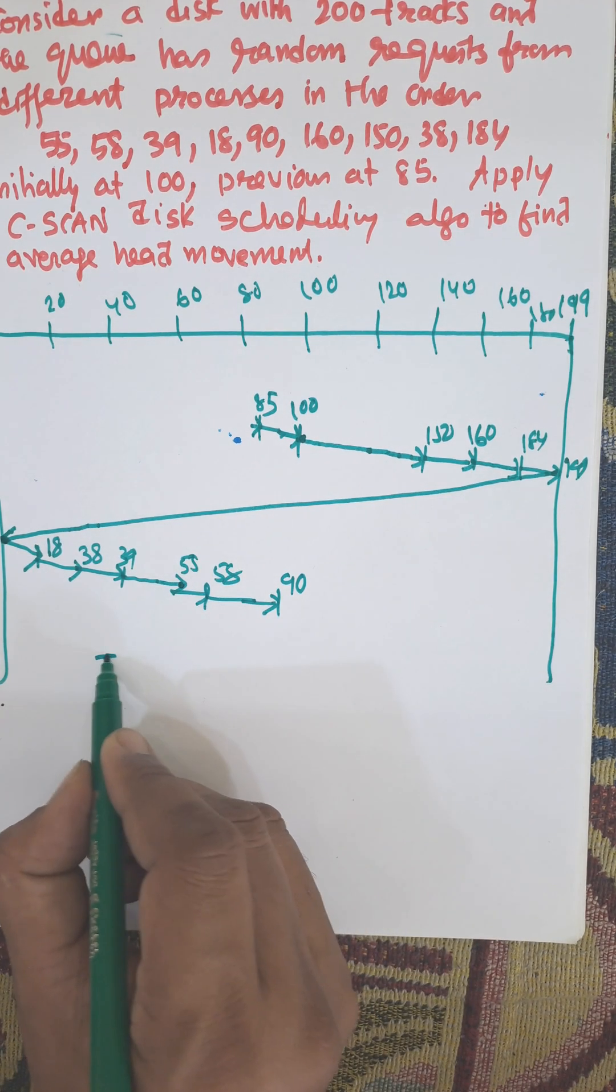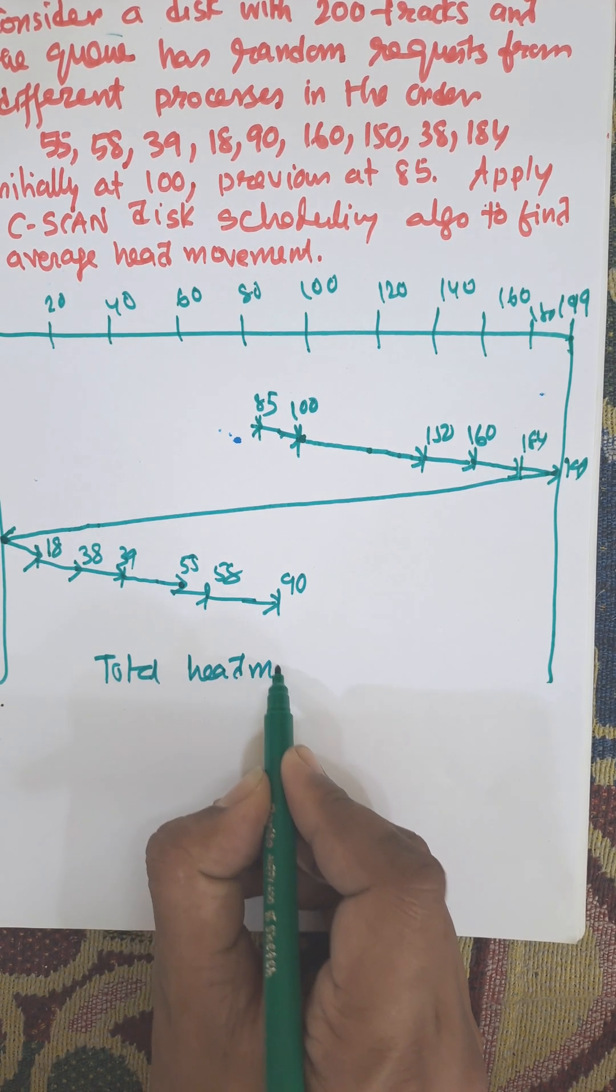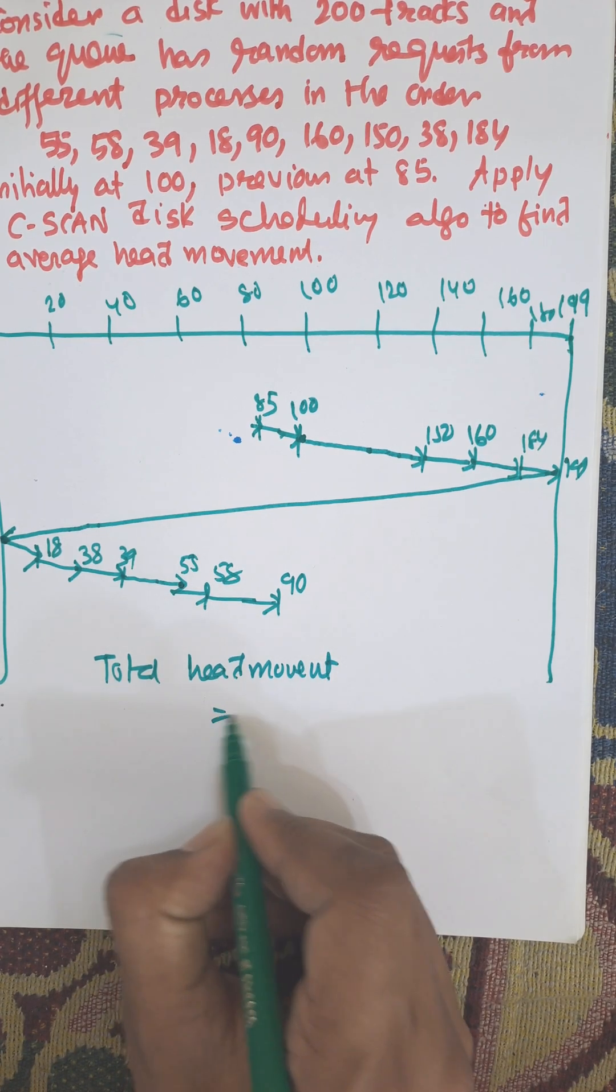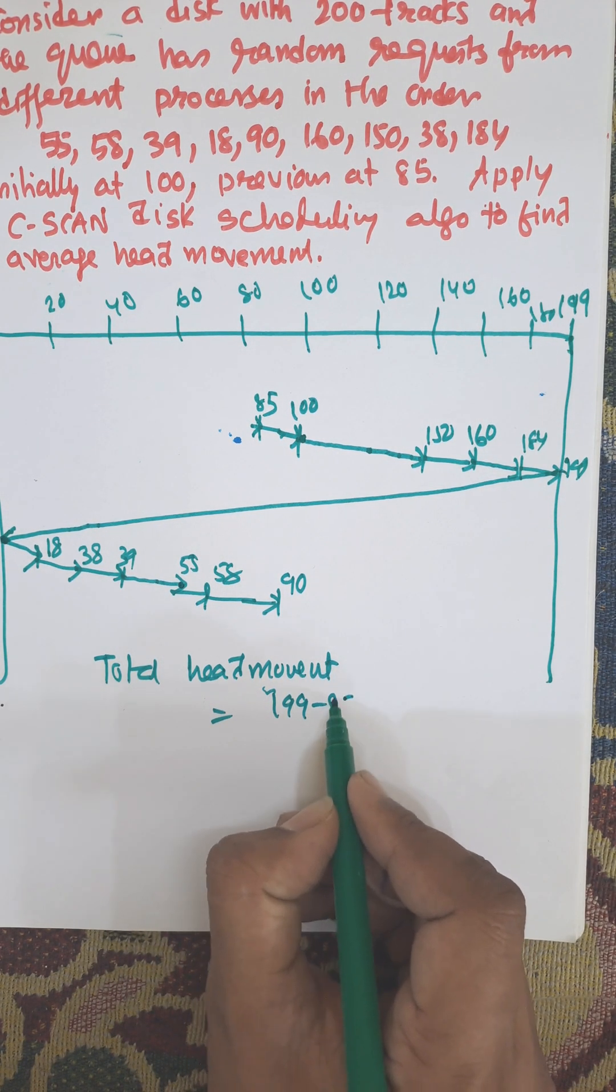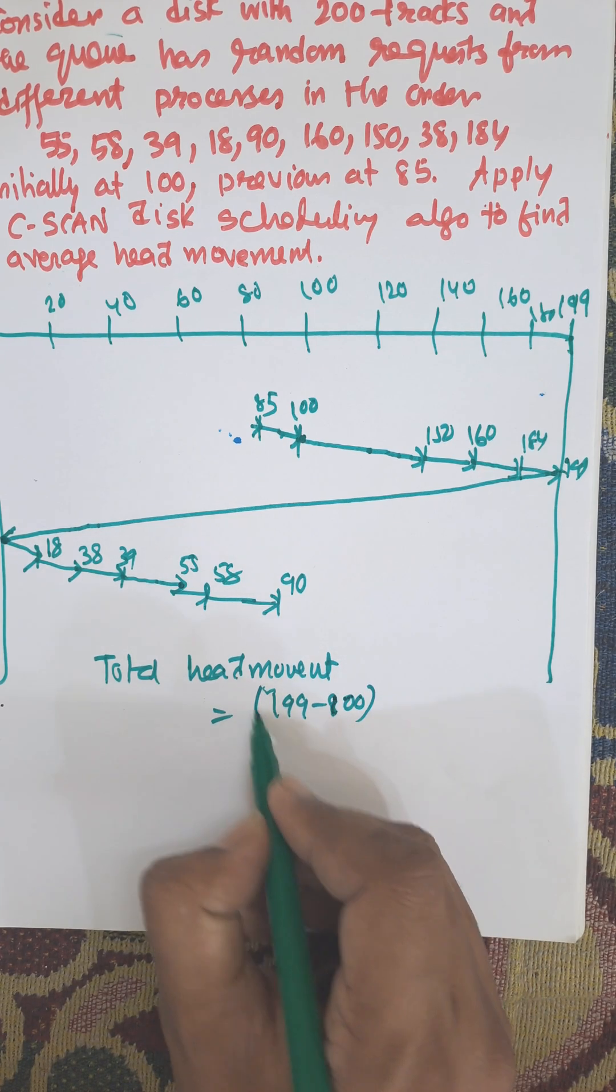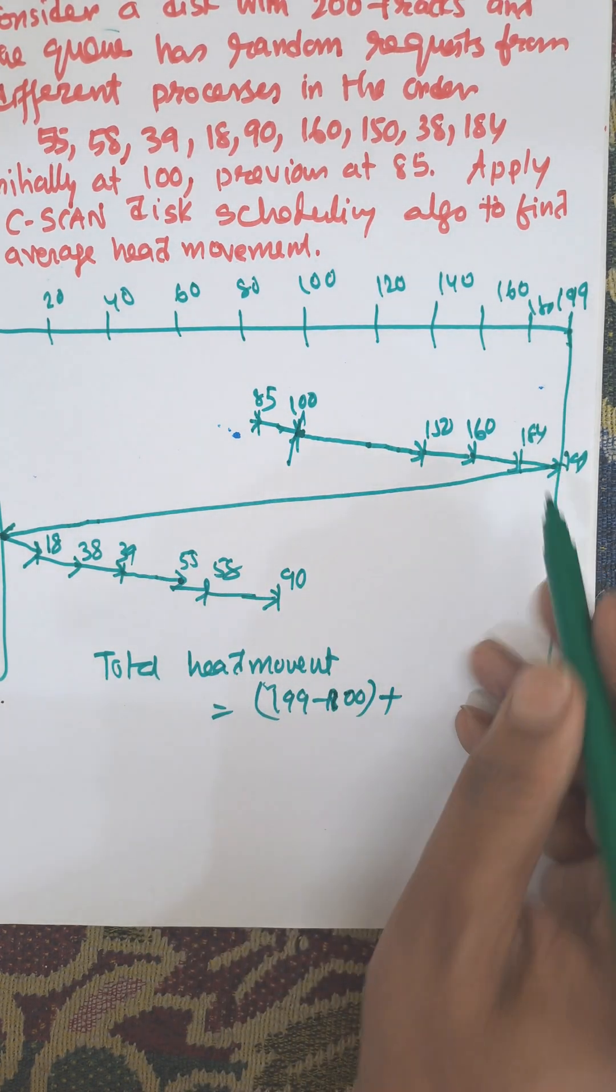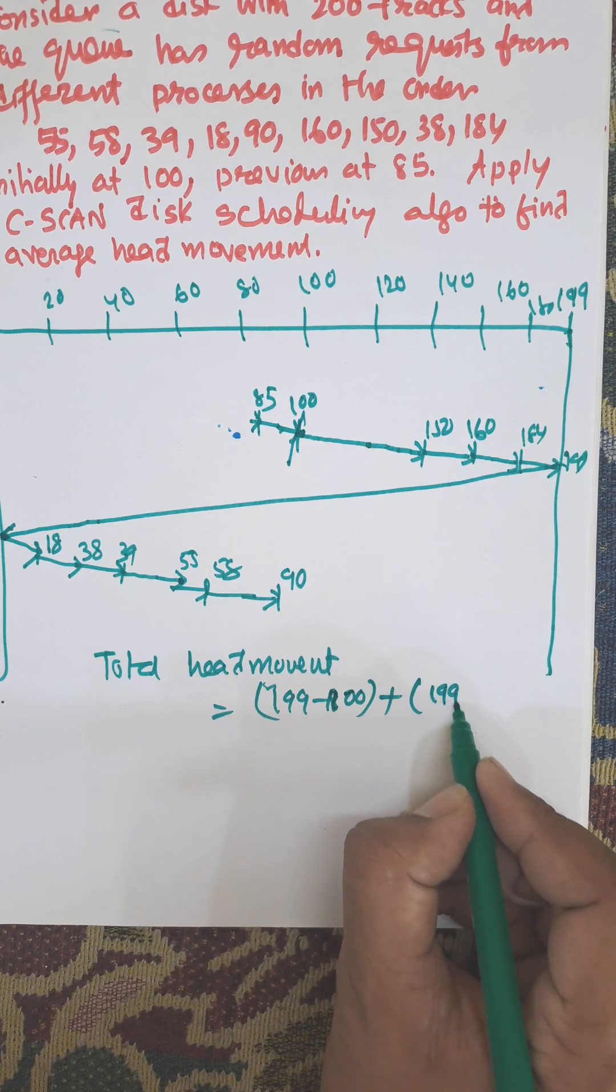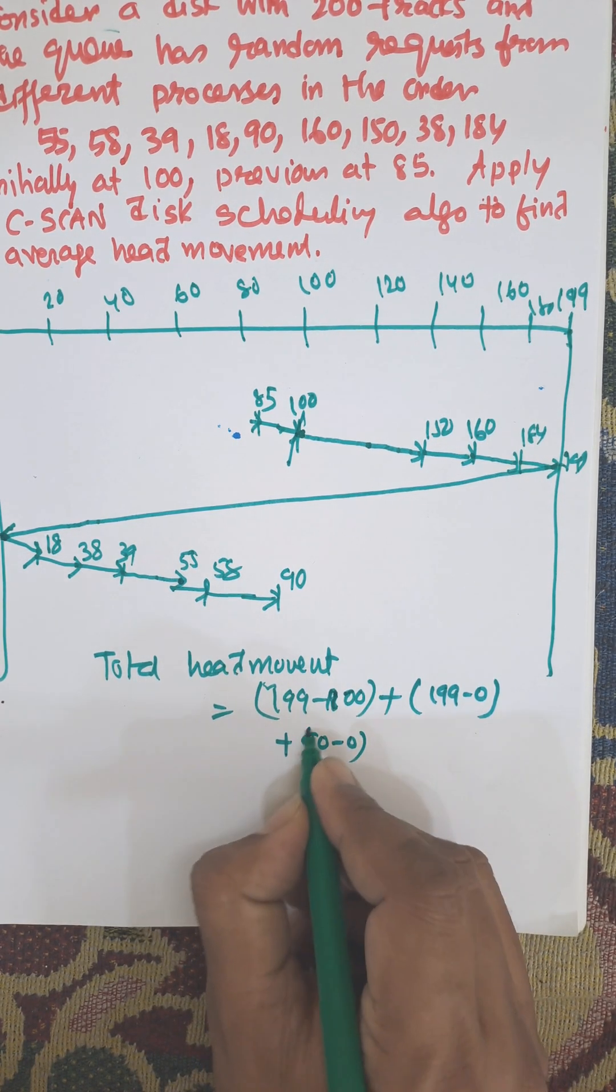So total head movement. Total head movement equals 199 minus 100, this was the initial stage, then 199 minus 0, then 90 minus 0. These are the total head movements.